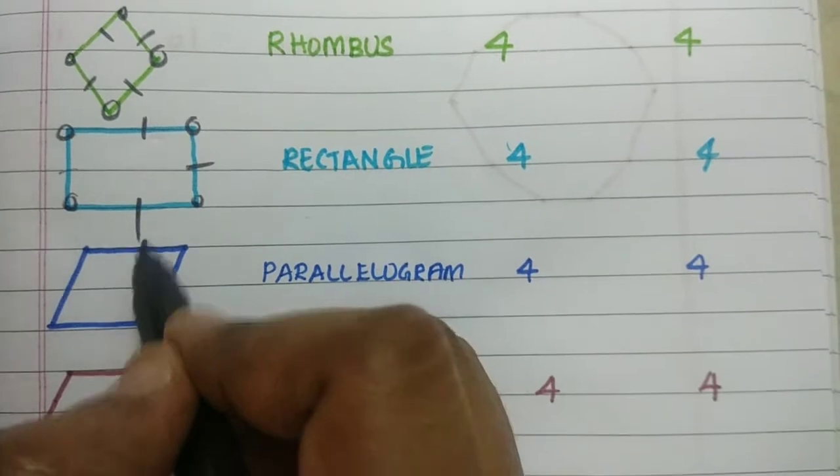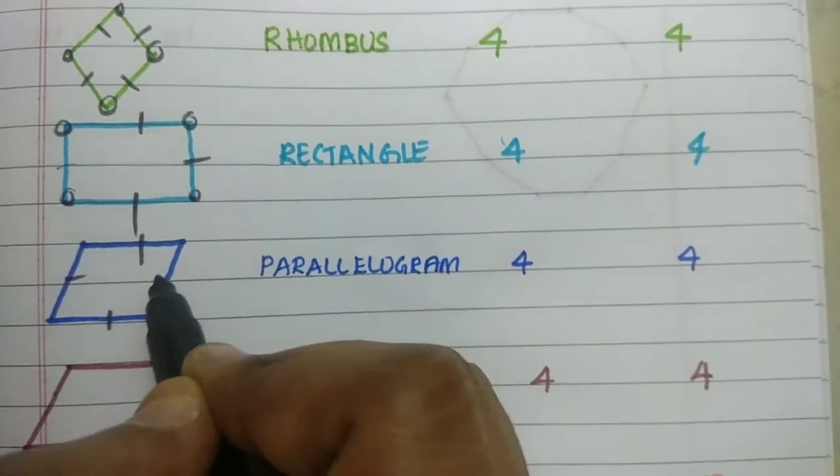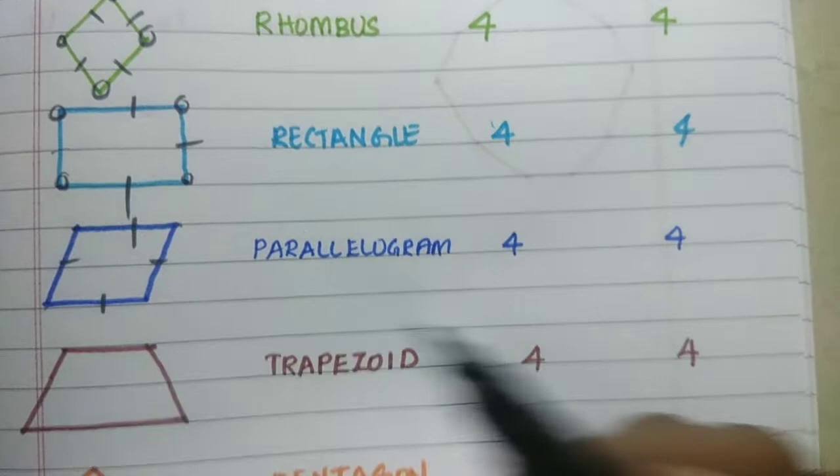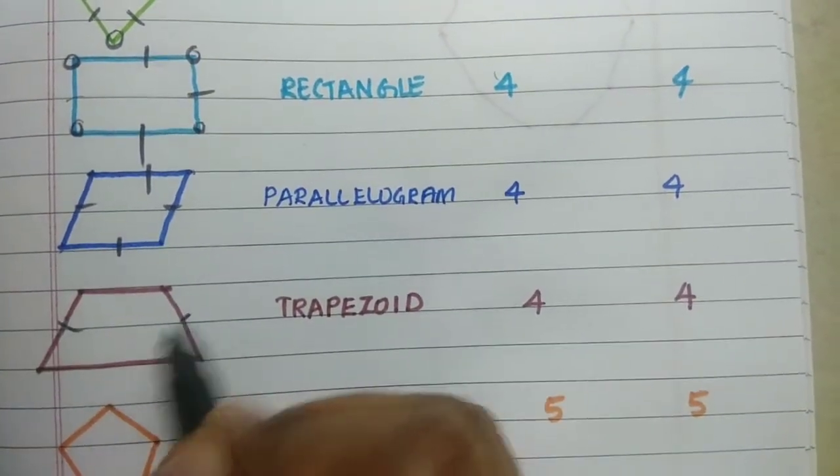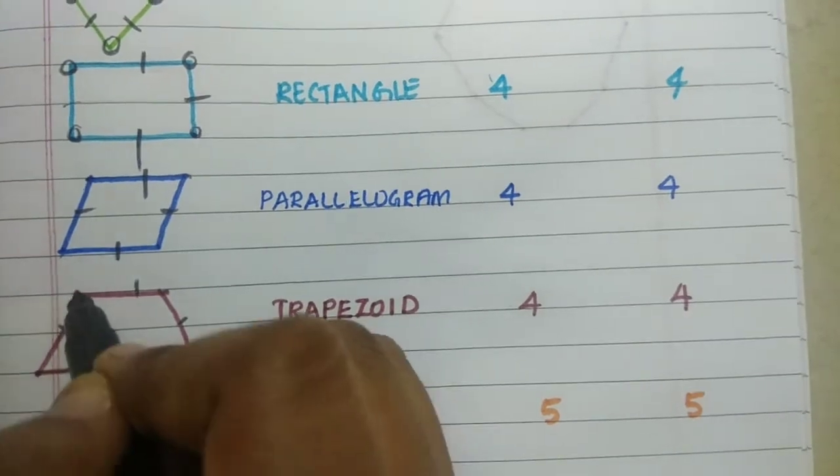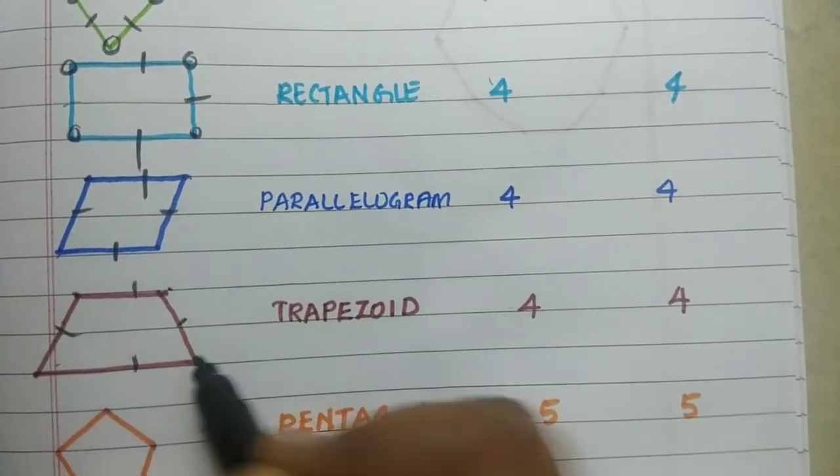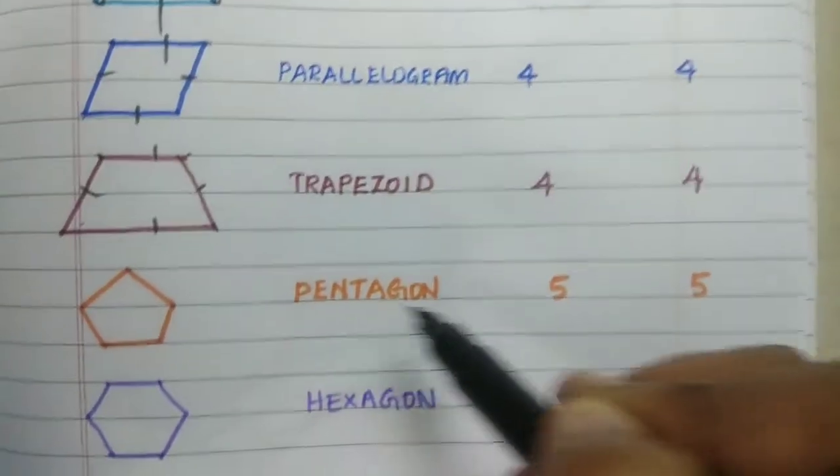So this is a parallelogram. Parallelogram has four sides and four vertices. Next is a trapezoid. Trapezoid has four sides and four vertices.